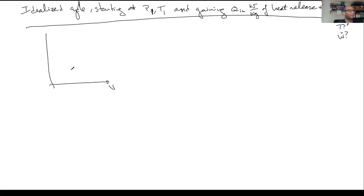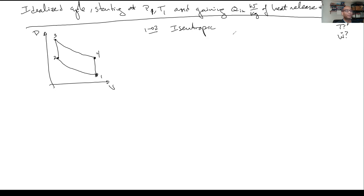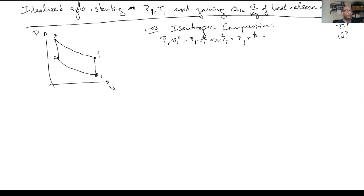I like to draw my PV diagram. It's an idealized cycle: go from state one to two, heat input at three, then four. For process one to two, there's no heat exchange — this is isentropic compression. Since this is an ideal gas with constant C_P, C_V, and k, I can use my isentropic relations: P2 * v2^k = P1 * v1^k. This gives me P2 = P1 * (V1/V2)^k, which is P1 times the compression ratio R to the k. So I can calculate P2.